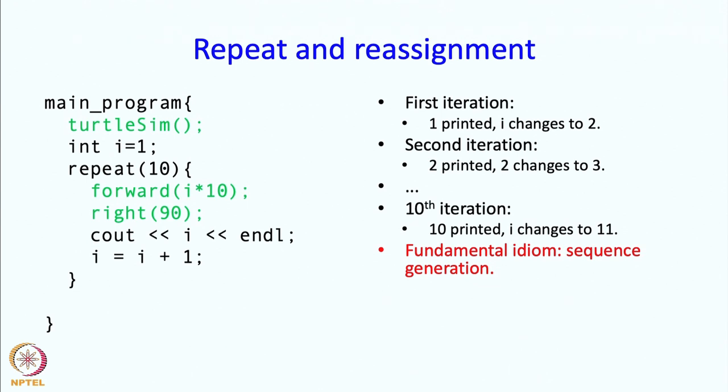So notice that in this green portion we are not changing the value of i at all. So i will have the same values in each iteration as it did earlier. But this means that the distance by which the turtle goes forward is going to be different in each iteration.